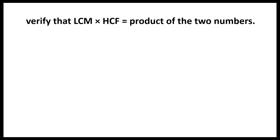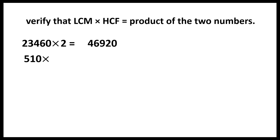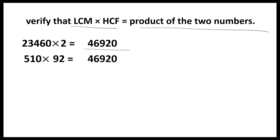We have to verify that LCM into HCF is equal to the product of the two numbers. LCM is 23,460 and HCF is 2. 23,460 into 2 is equal to 46,920. The numbers are 510 and 92; if we multiply these two we get 46,920. So we can say that LCM into HCF is equal to the product of the two numbers — these two values are the same.